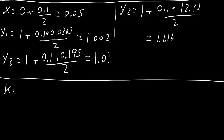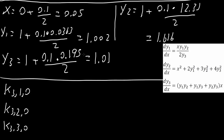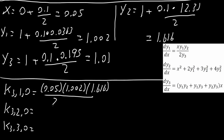Next we get k3,1,0, k3,2,0, and k3,3,0 using the original equations. For k3,1,0: x is 0.05, times y1 which is 1.002, times y2 which is 1.616, divided by 2 times y3 which is 1.01, giving 0.0401.